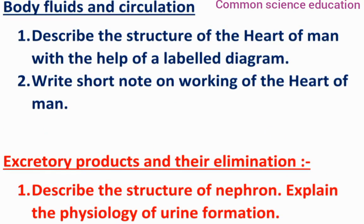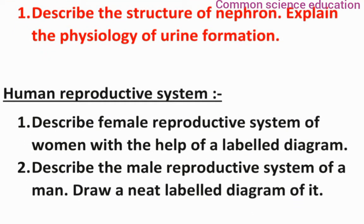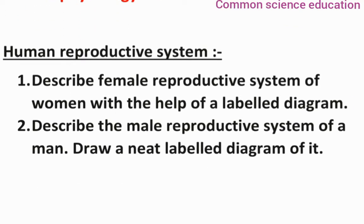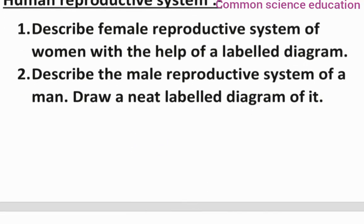So from Body Fluids and Circulation and Excretory Products, those two lessons have their questions covered. Moving on to Human Reproductive System — this is generally a compulsory topic. The questions are: 'Describe the female reproductive system of a woman with the help of a labelled diagram,' and 'Describe the male reproductive system of a man and draw a neat labelled diagram.' Both are compulsory, so prepare one essay answer from each.